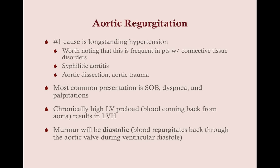It's worth noting that aortic regurgitation is also seen in patients with connective tissue disorders — like Marfan syndrome or Ehlers-Danlos syndrome — patients with syphilitic aortitis, and patients with aortic dissection or aortic trauma. While it's very common in these patients, these patients aren't very common, so the number one cause remains long-standing hypertension. The best way to think of why it happens: with hypertension, high systemic pressure makes it difficult to pump blood out, so blood can regurgitate back into the left ventricle.